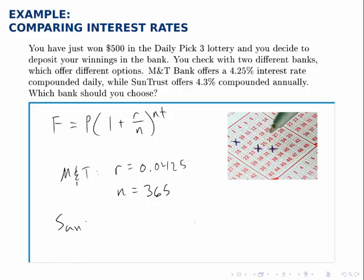Whereas, SunTrust, R is 0.043 and N is 1. It's compounded annually.